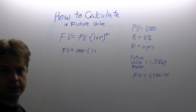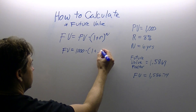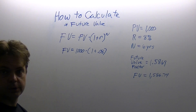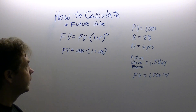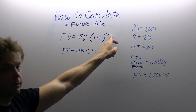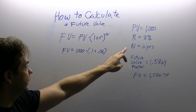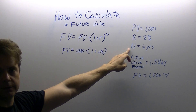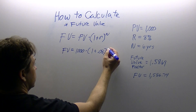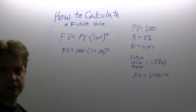We have it as a percent, so we are going to flip that to a decimal. Close our parenthesis, now we substitute our N. N is time — how many years are we going to do this for? It is 6 years, so we raise that to the 6.